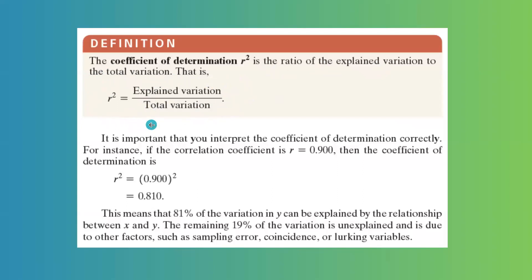It's very important that you interpret the coefficient of determination correctly. For example, if the correlation coefficient is r about 0.90, then the coefficient of determination is 0.81 because we are taking this number and raising to the second power. So it is decreased.